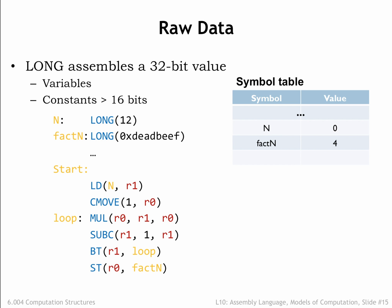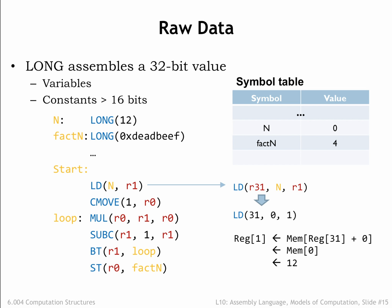To access the first data value, the program uses a load instruction — in this case one of the convenience macros that supplies R31 as the default value of the RA field. The assembler replaces the reference to the label n with its value 0 from the symbol table. When the load is executed, it computes the memory address by adding the constant 0 to the value of the RA register, to get the address of the memory location from which to fetch the value to be placed in R1.